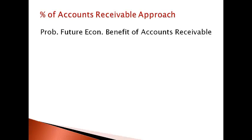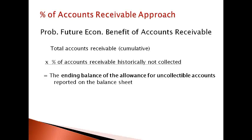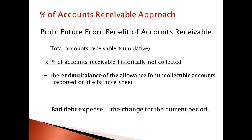The percent of accounts receivable approach estimates the allowance account balance that gives the estimated probable future economic benefit of the accounts receivable. This approach uses the historical percent of accounts receivable that have not been collected in the past to estimate the amount that is not expected to be collected in the future. It is important to notice that this approach does not compute bad debt expense for one period. This approach calculates the ending balance in the allowance account to be used to report the probable future economic benefit of accounts receivable on the balance sheet. Bad debt expense is the difference in the current period allowance account and the ending balance in the allowance account.